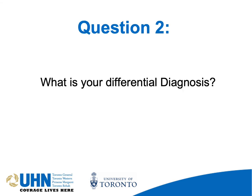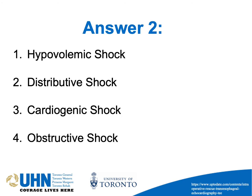In that previous case — hypotension, tachycardia, and low sats — the differential diagnosis is: hypovolemic shock, distributive shock, cardiogenic shock, or obstructive shock. We're going to go through these step by step. We're not going to go through neurogenic shock at this point.